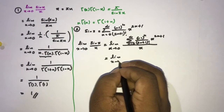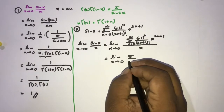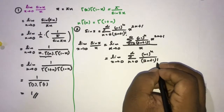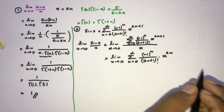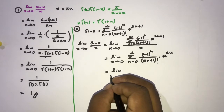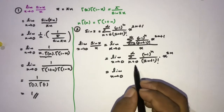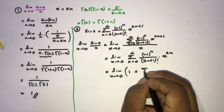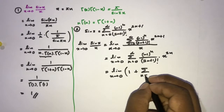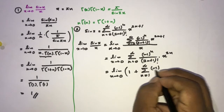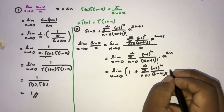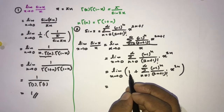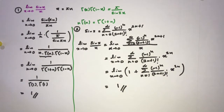We have the limit as x approaches 0 of the infinite sum of (−1)^n / (2n+1)! times x^(2n). Looking at the first term (n=0), plugging in 0 gives 1. For the remaining terms from n=1 to infinity, (−1)^n/(2n+1)! times x^(2n) goes to 0 as x approaches 0. So the answer is 1.